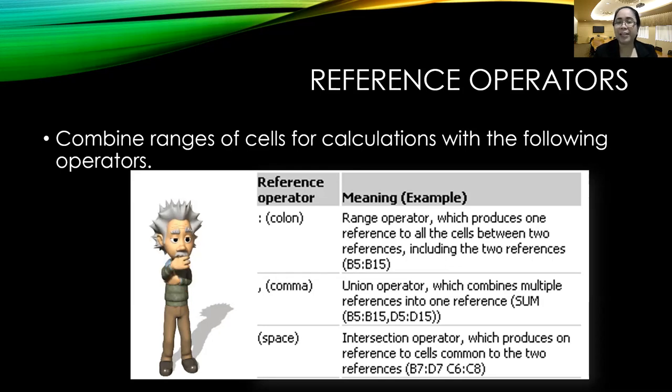Next, we have the comma. The comma is technically called the union operator. The union operator combines multiple references into one reference. The formula, as a sample says, SUM reference 1 is B5 until B15, while reference 2 is D5 until D15. Now combine the values coming from reference 1, B5 until B15, and the values from D5 until D15. Then we can get the total summation of any value coming from these references.